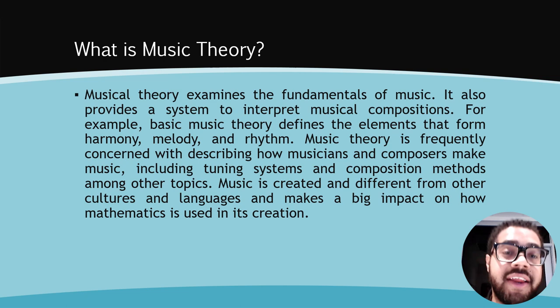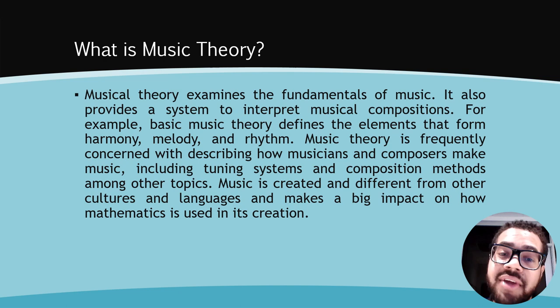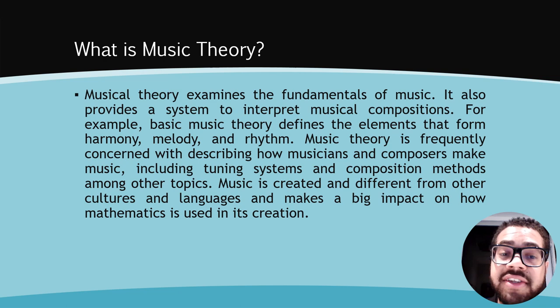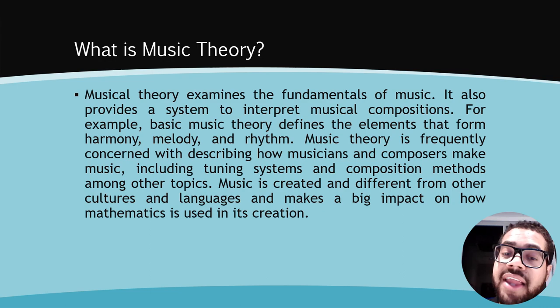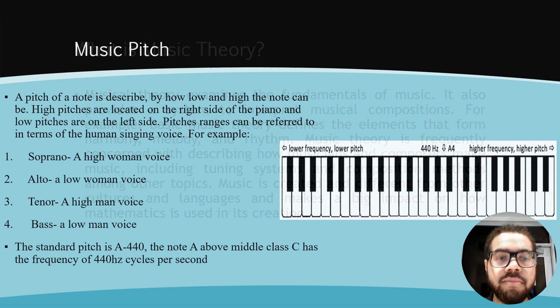Before we jump right into the outline, we first need to describe what music theory is. Musical theory examines the fundamentals of music and provides a system to interpret musical compositions. For example, basic music theory defines the elements that form harmony, melody, and rhythm. Music theory is frequently concerned with describing how musicians and composers make music, including tuning systems and composition methods. Music is created differently across cultures and languages, and that makes a big impact on how mathematics is used in its creation.